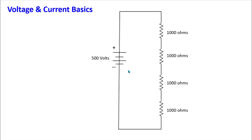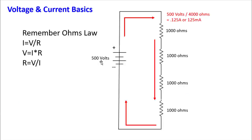First, for current to flow in a circuit you must have a complete closed loop circuit. Second, if you have multiple devices in series and you're trying to measure their combined resistance, you add those together. For example, this circuit has 500 volts and four 1,000-ohm resistors — that's 4,000 ohms. Using Ohm's Law, I = V/R: 500 volts divided by 4,000 ohms gives 125 milliamps, or 0.125 amps, flowing through this circuit.